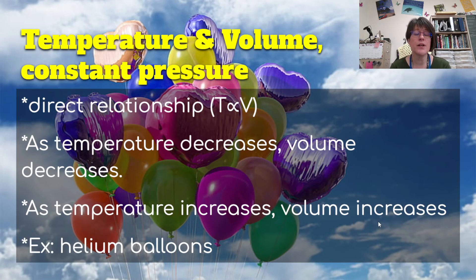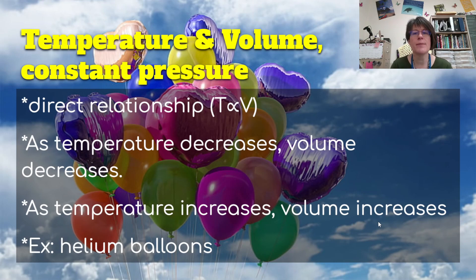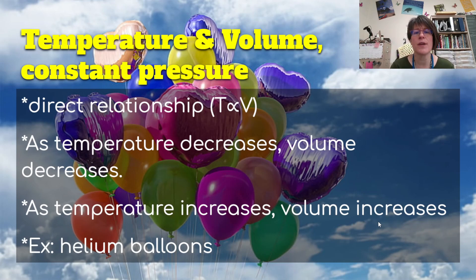Another relationship is temperature and volume at constant pressure — these have a direct relationship. As temperature decreases, volume decreases; as temperature increases, volume increases. We tend to see this with helium balloons. You may have bought a helium balloon in a warm store, went outside on a cold winter day, and the balloon shrank. It wasn't defective — it was just a temperature change. As soon as you take those balloons back into a warm room, the volume increases again because the temperature drop causes the molecules to move slower.